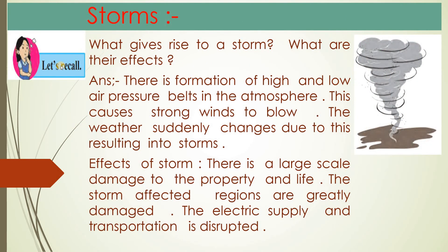Storm — what is a storm? What gives rise to a star? Iska effect kya hota hai? There is a formation of high and low air pressure in the atmosphere. This causes strong winds to blow. The weather suddenly changes due to this, resulting in a storm — atmosphere mein high aur low pressure ke kaaran tez hawaayein chalti hain aur achaanak weather change hota hai, aur isi kaaran storm aati hai.